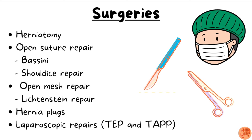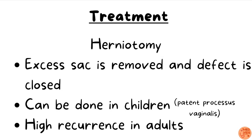The various surgeries for inguinal hernia include herniotomy, open suture repair (Bassini repair, Shouldice repair), open mesh repair — Lichtenstein repair — hernia plugs, and laparoscopic repairs (TEP and TAPP). Herniotomy involves reducing the hernia contents, removing the excess sac, and closing the defect. It is typically performed in children, in whom the cause is usually a patent processus vaginalis. Herniotomy alone is not sufficient for adults due to the increased risk of recurrence.